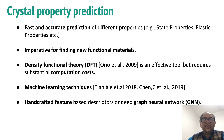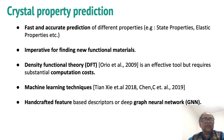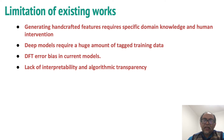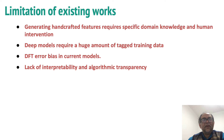Existing techniques either use handcrafted feature-based descriptors or deep graph neural networks to generate representations from the 3D confirmation of crystal structures. Limitations include: handcrafted features requiring domain knowledge and human intervention; deep learning models requiring huge amounts of training data, which is often scarce; training data created through DFT inheriting DFT error bias; and deep learning models lacking interpretability and algorithmic transparency.